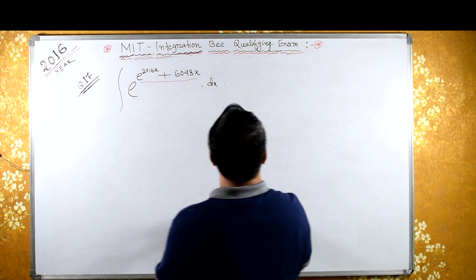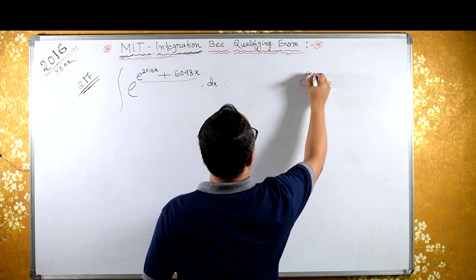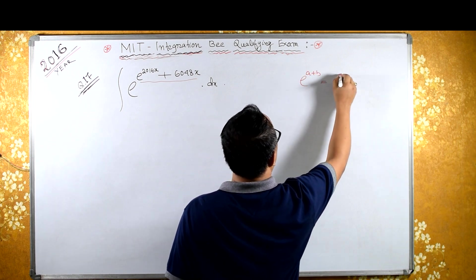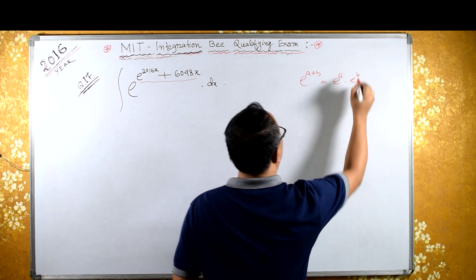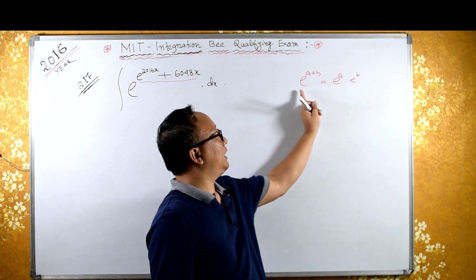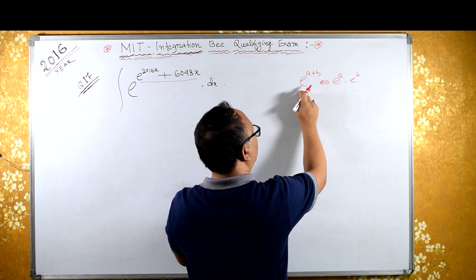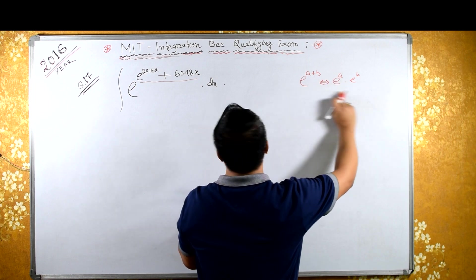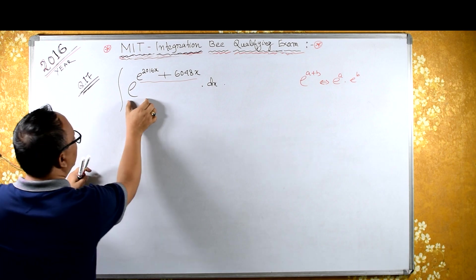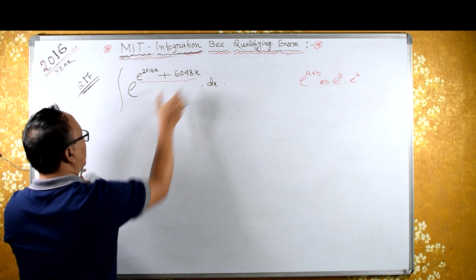We know that e raised to (a plus b) is the same as e raised to a, into e raised to b. Why? If bases are equal, you can add the indices. This is the rule — from here to here you can go, and from here to here you can go.